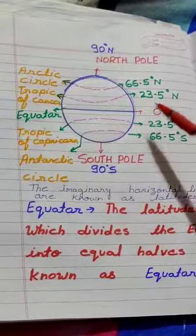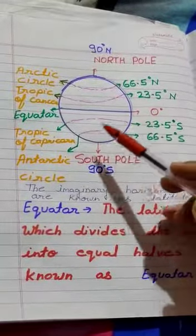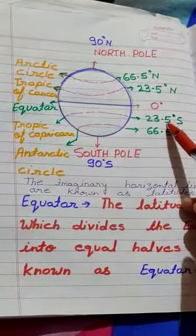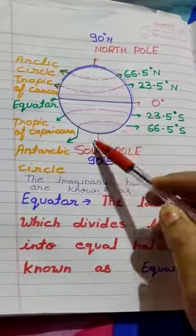This is the Tropic of Capricorn. It's situated at 23.5 degrees south. And this is the Antarctic Circle, situated at 66.5 degrees south.